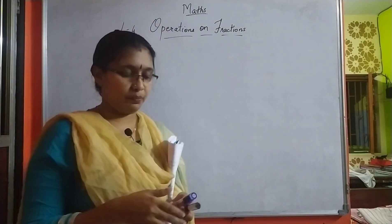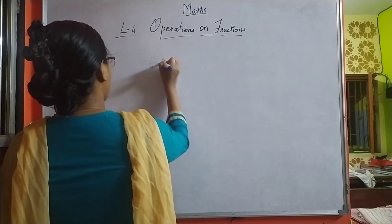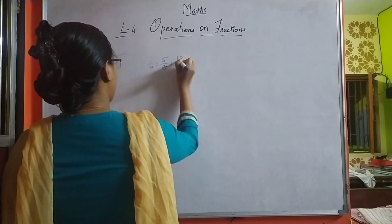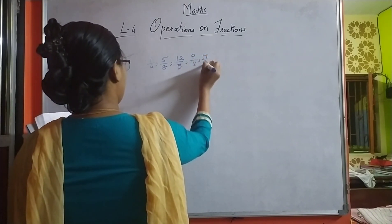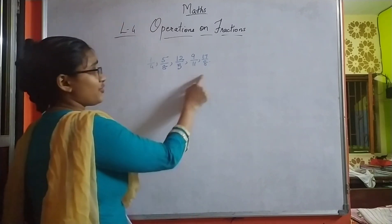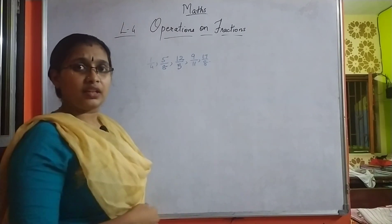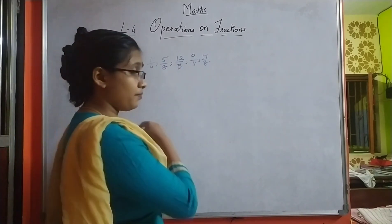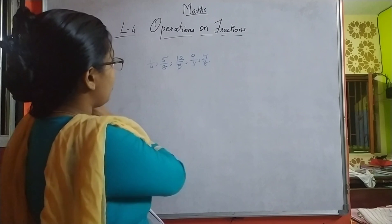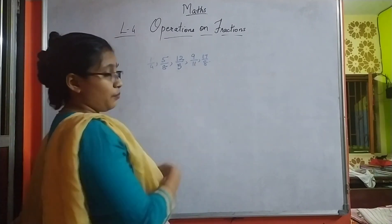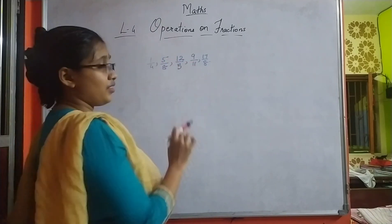Let us head towards some examples. I am giving some examples like 1 upon 4, 5 upon 8, 12 upon 5, 9 upon 11, and 17 upon 8. Now, when you look at these fractions, as we all know the upper part is called numerator and the bottom part is called the denominator. Now, what is the difference between some of these? Fractions like 1 upon 4, 5 upon 8, and 9 upon 11 — these three fractions have numerators less than the denominators.